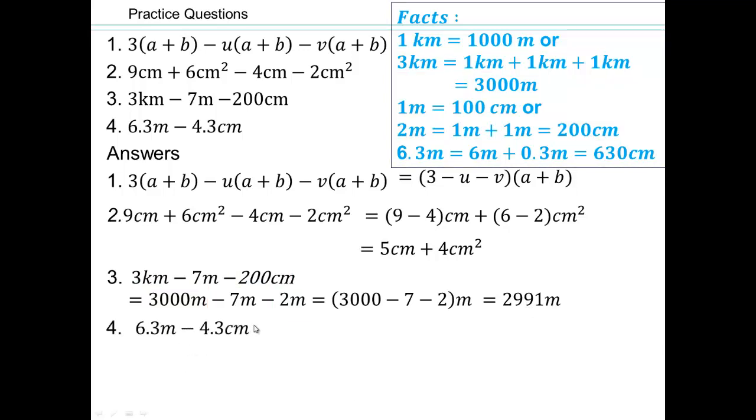Last one. 6.3 meters can be thought of as 6 meters plus 0.3 meters. Go ahead and do that subtraction. If you're not sure how we got that, this is 0.0, so you could borrow one and finish it off.